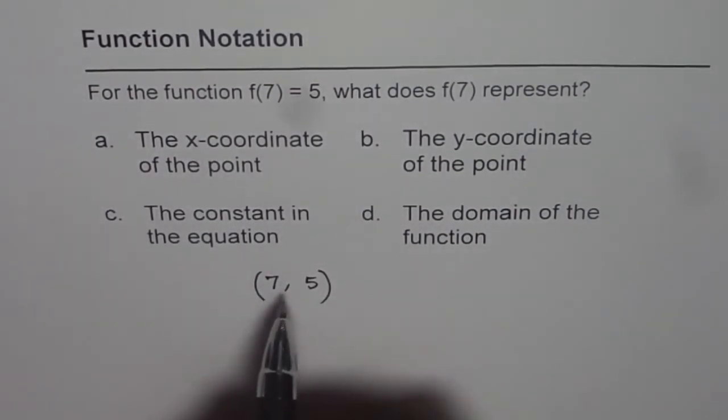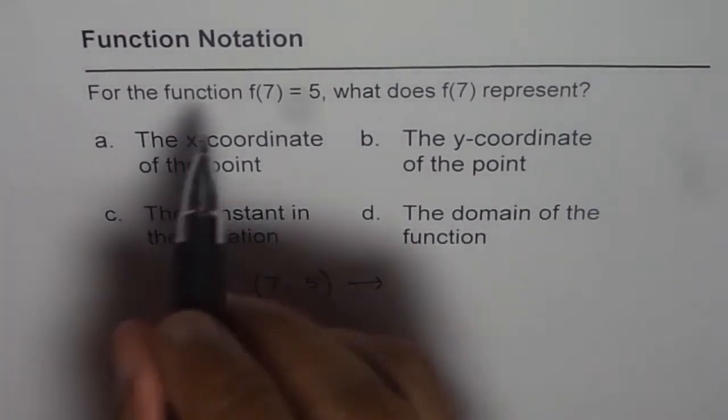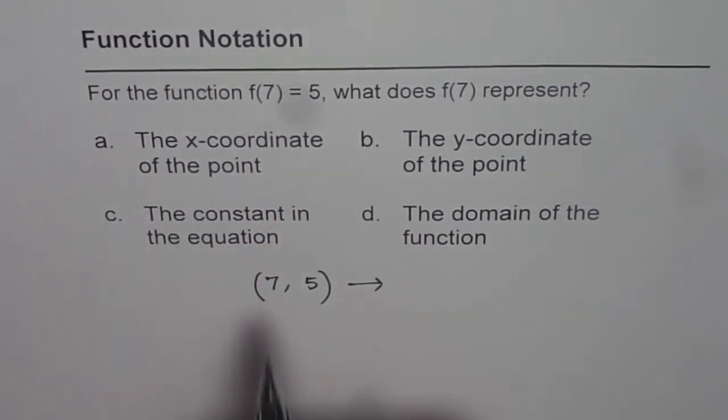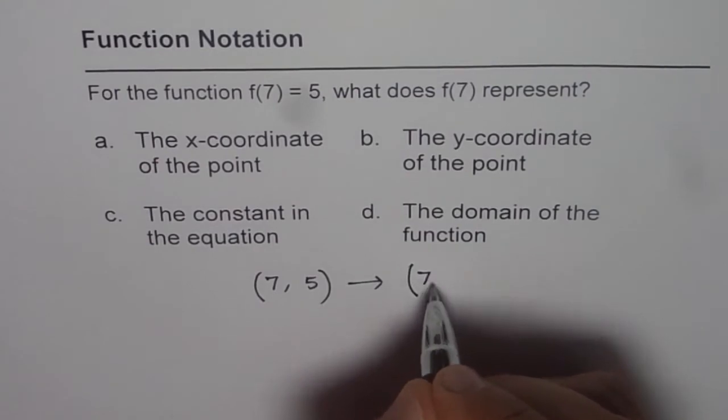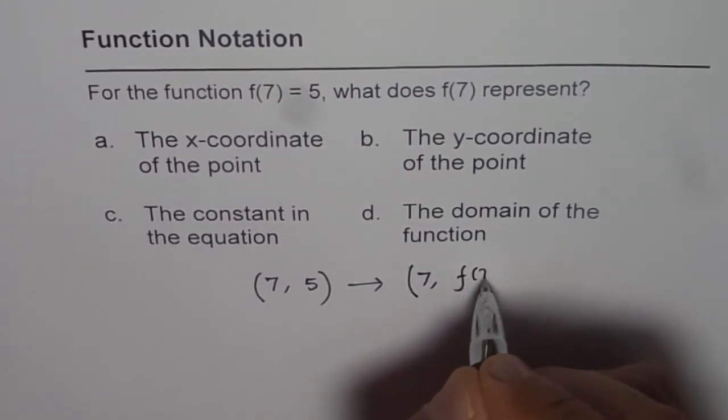Basically in this, when we use the function notation, we could also write this as 7 and f of 7.